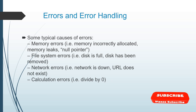Errors and error handling — some typical causes of error: memory errors (memory incorrectly allocated, memory leaks, null pointers), file system errors (disk is full, file has been removed), network errors (network is down, URL does not exist), and calculation errors (divide by zero). These are very important things you should know about errors. These basics have to be clear.